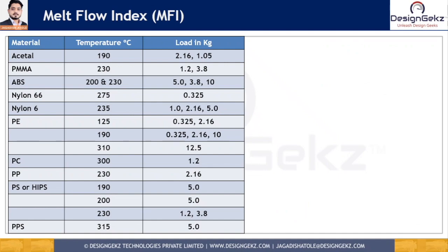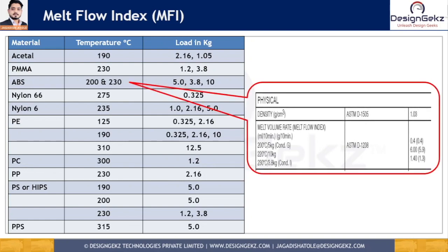Here are some MFI values for various materials. The temperature is in degrees Celsius and the load is in kg. For ABS, temperatures of 200°C and 230°C are used. The reading is noted alongside temperature and load — for example, 200°C with 5 kg load, 220°C with 10 kg load, and 230°C with 3.8 kg load, as seen on a technical data sheet.